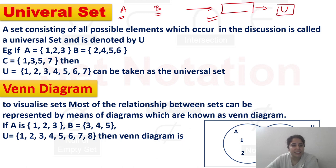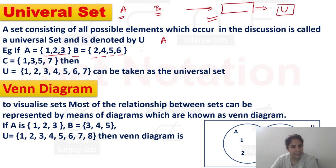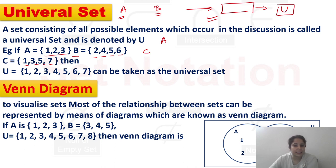I will show you the example. For example, A set is 1, 2, 3. And B set is 2, 4, 5 and 6. And C set is 1, 3, 5 and 7. First of all, we will discuss about A, B, etc.